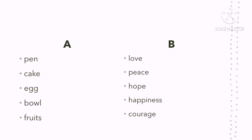Now, as we can see, words in Group A can be seen, touched, smelled, tasted, and heard. Meanwhile, words in Group B cannot be seen, cannot be touched, cannot be heard, cannot be tasted, and cannot be smelled. And these two groups of words actually fall into two groups — we have the abstract nouns and we have the concrete nouns.